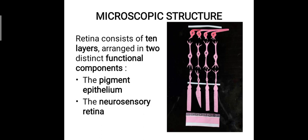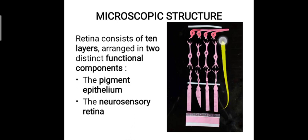Now let's see the microscopic structure of the retina. The 10 layers are arranged into two distinct functional components: the pigment epithelium, where the chemical reaction occurs, and the neurosensory retina, which converts and transmits the impulses formed by that chemical reaction.